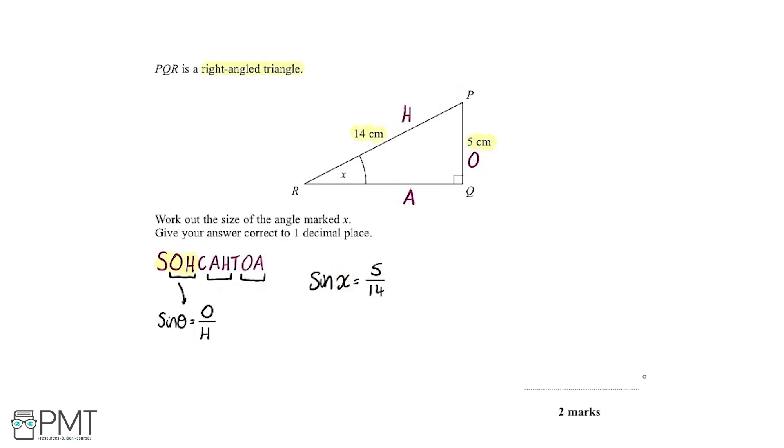So our next step is to work out what X is. And the way we do this is by using inverse sine. So we can say X equals the inverse sine, so you write that as sine to the minus 1 of 5 over 14. And what you do, you can put this straight into the calculator.